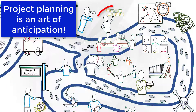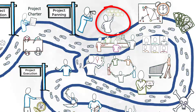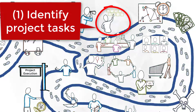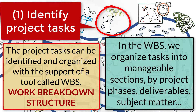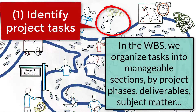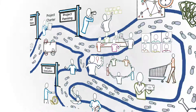First step: identify project tasks. The project tasks can be identified and organized with the support of a tool called WBS, Work Breakdown Structure. In the WBS, we organize the tasks into manageable groups — that can be by project phases, deliverables, or by subject matter.